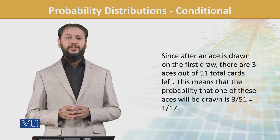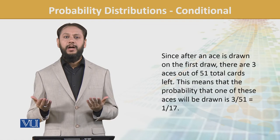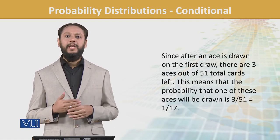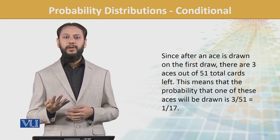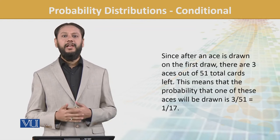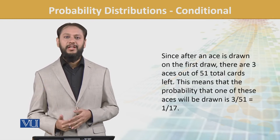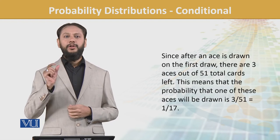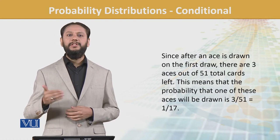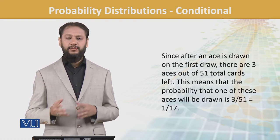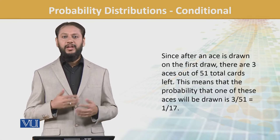Since after an ace is drawn on the first draw, there are 3 aces out of 51 total cards left. This means that the probability that one of these aces will be drawn is 3/51 = 1/17. A lower number because the numerator decreased from 4 to 3, which was already a small number, so a big fall is expected. We can see its impact on the probability and how much it changes.